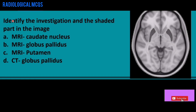In this question we have to identify the investigation and the shaded part. This is an MRI of the brain because the bone cortex here is black. To identify a CT or MRI, always look at the bone cortex — if it is white it is a CT scan, if it is black it is an MRI, as in this image. Option D is automatically ruled out because it states it is a CT scan, which is incorrect.